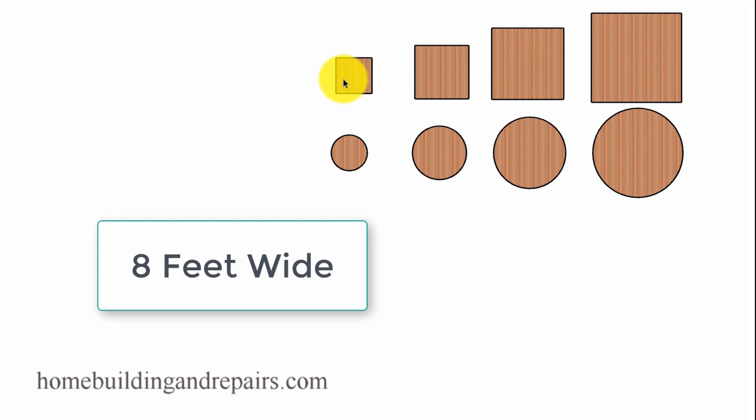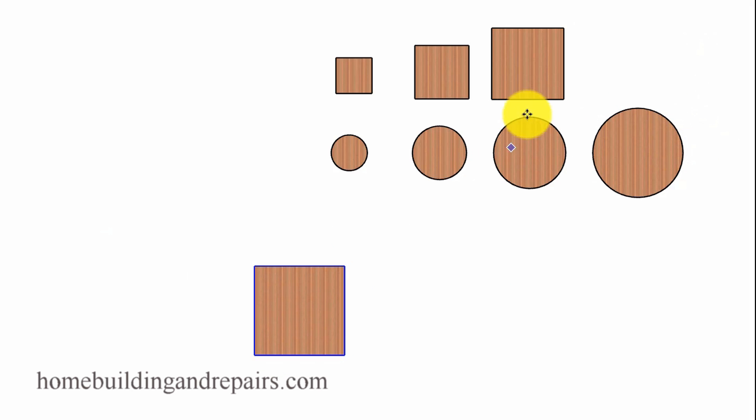So here we have an eight foot circle, eight foot long square, then we're going to add four feet to that, 12 foot, 12 foot diameter, 16 foot diameter, 16 foot, 20 foot, and 20 foot diameter. The first deck I'm going to build, I'm just simply going to grab these squares and put them in order like this.